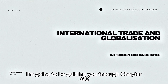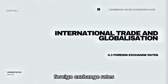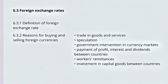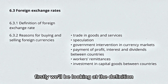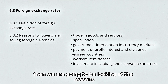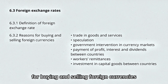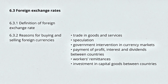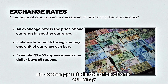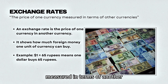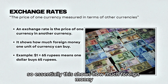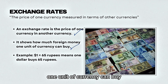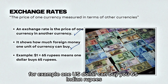In this video I'm going to be guiding you through Chapter 6.3 Foreign Exchange Rates. Firstly we'll be looking at the definition, then we are going to be looking at the reasons for buying and selling foreign currencies. An exchange rate is the price of one currency measured in terms of another — essentially how much foreign money one unit of currency can buy. For example, one US dollar can buy you 65 Indian rupees.